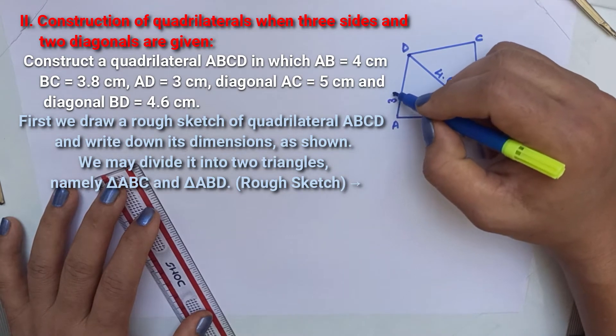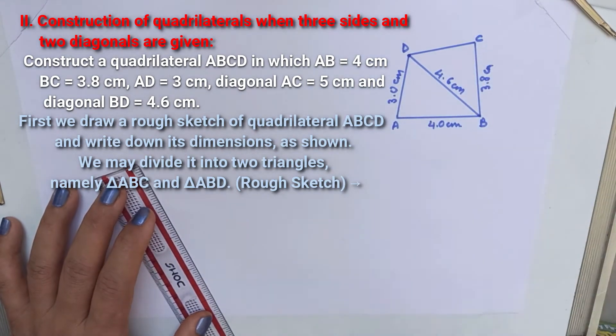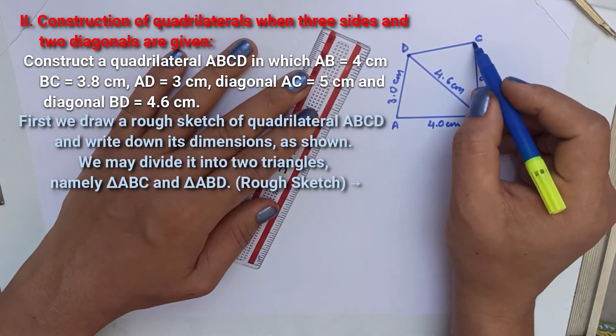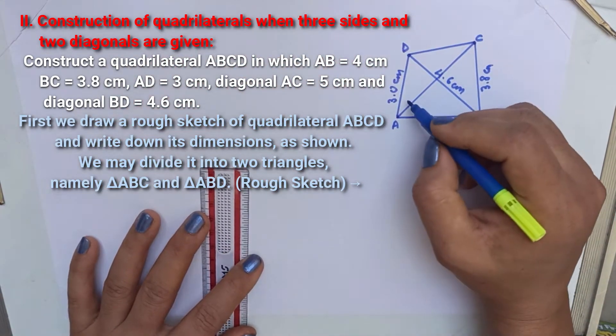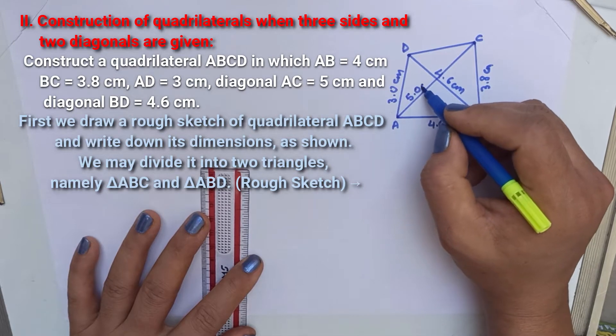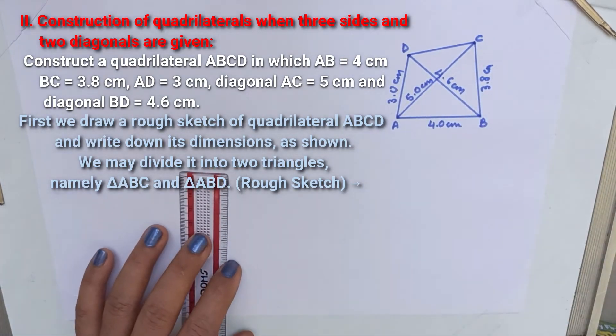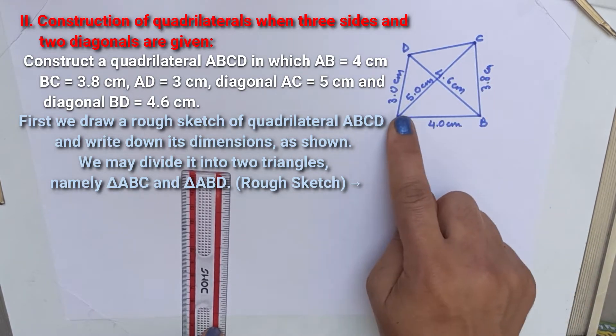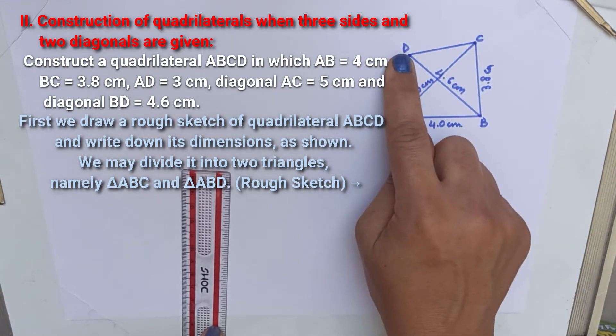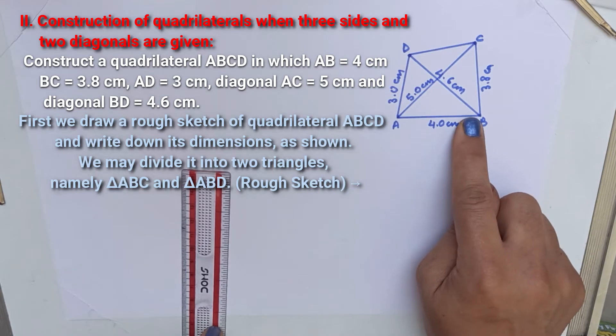Before construction, we should always remember to draw a rough sketch of the figure and write down its dimensions. To draw this quadrilateral ABCD, we will divide it into two triangles, namely triangle ABC and triangle ABD.